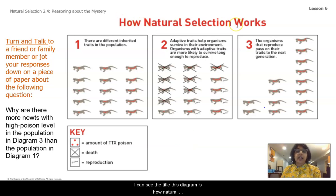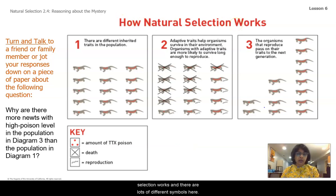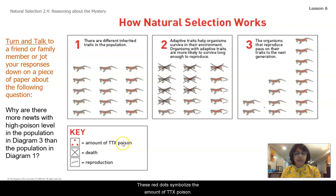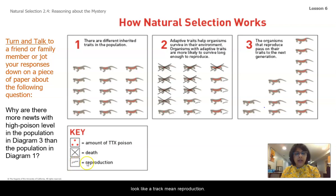I can see the title of this diagram is 'How Natural Selection Works,' and there are lots of different symbols here, so I'm going to make sure I read the key and understand what each of these symbols means. These red dots symbolize the amount of TTX poison, X symbolizes death, and these little lines that kind of look like a track mean reproduction.